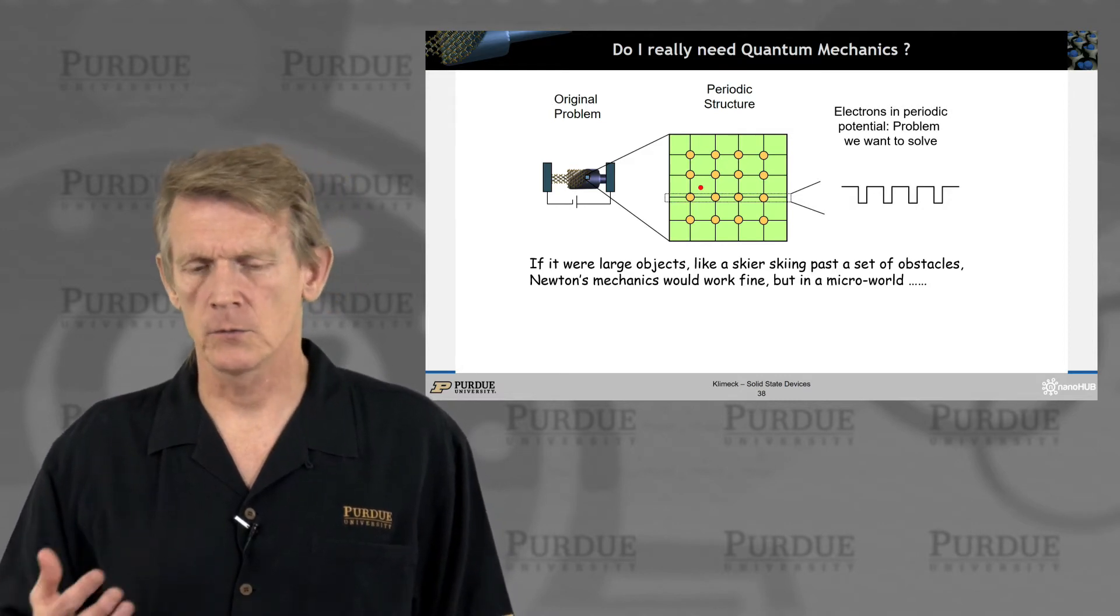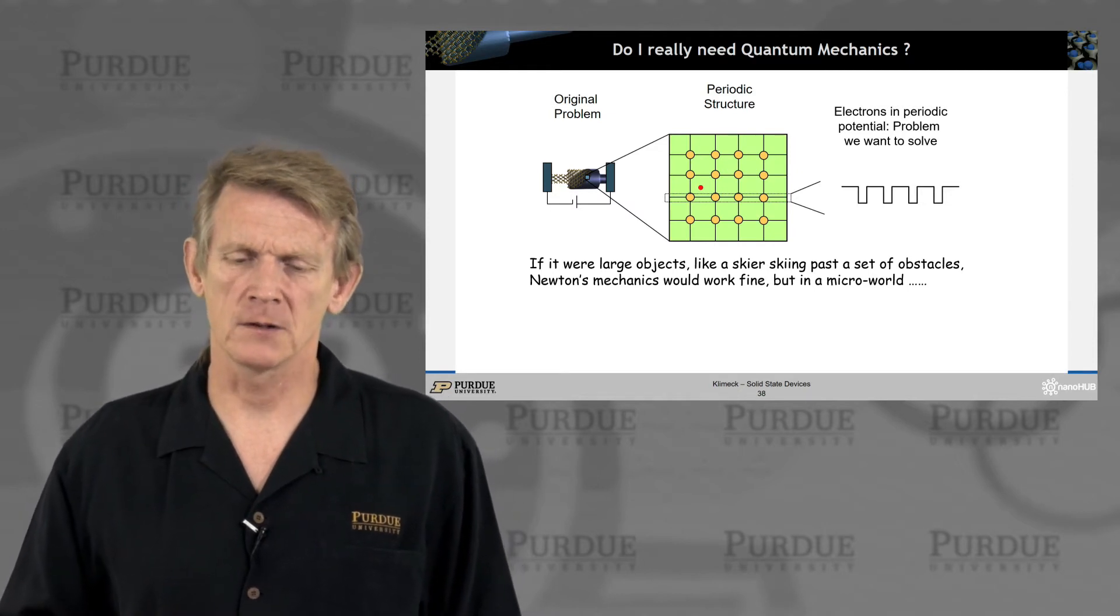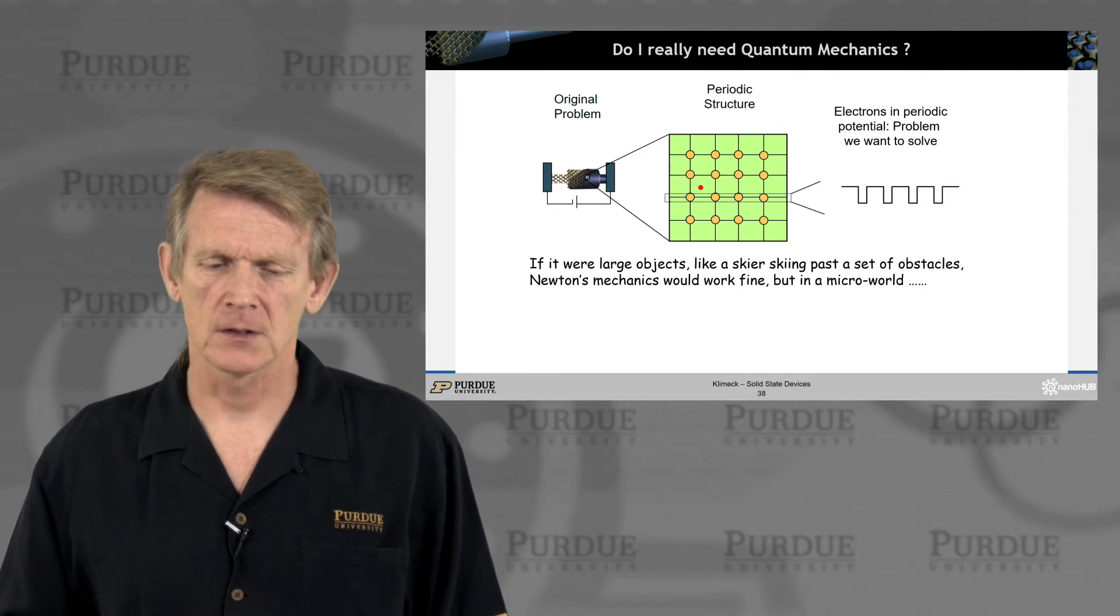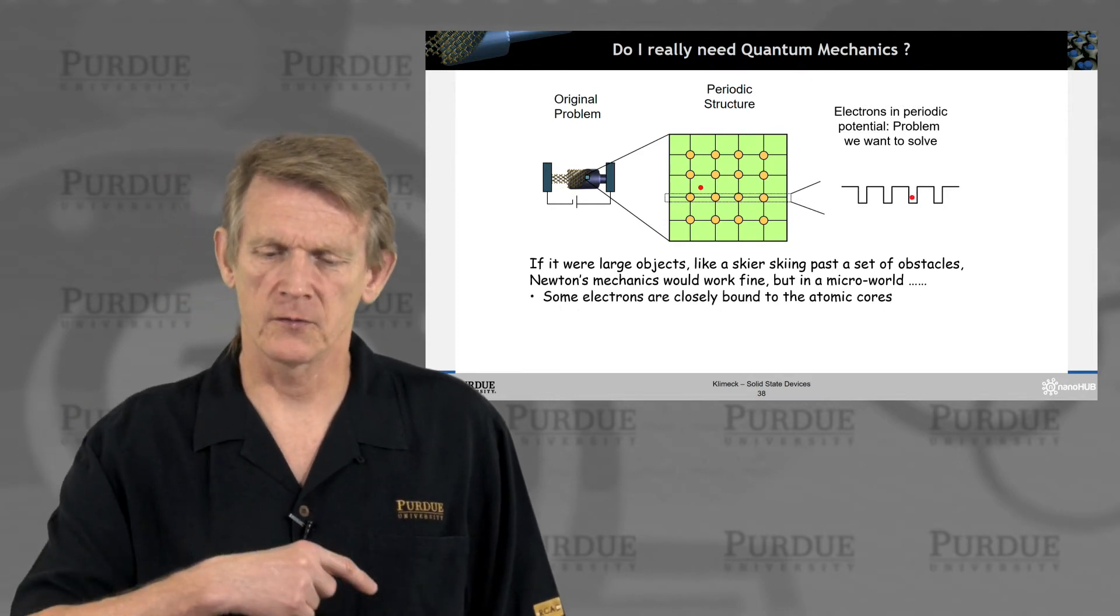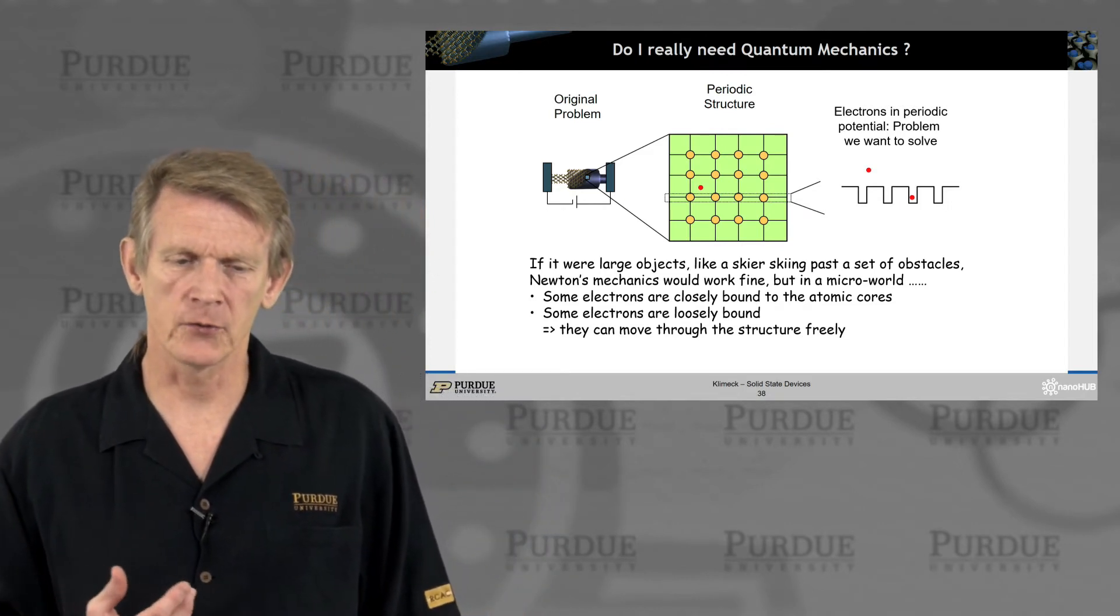In the simplest of all pictures, we might interpret that like a square well where electrons are confined in buckets around the atoms. Some electrons are confined, and other electrons might move above these buckets and can move freely.